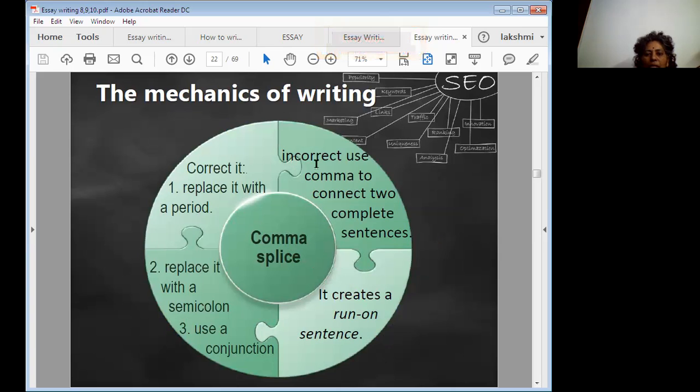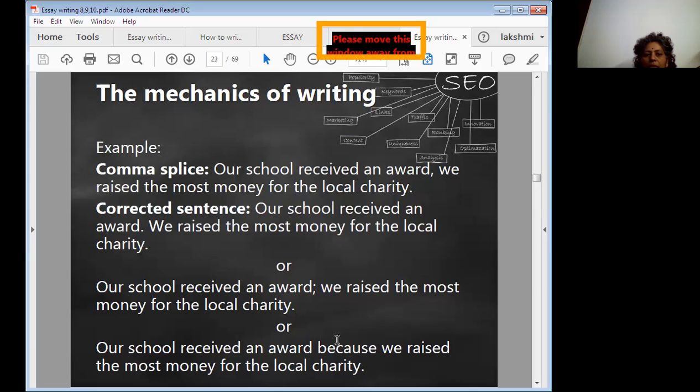Incorrect use of comma to connect two complete sentences. Replace it with a semicolon, and use a conjunction. It creates a run-on sentence at the end.